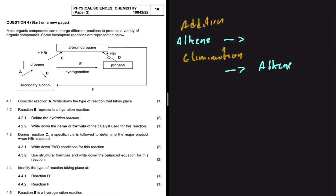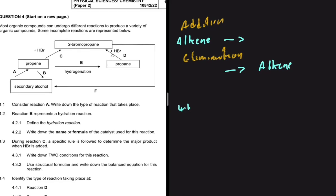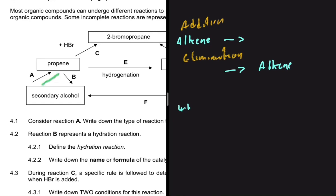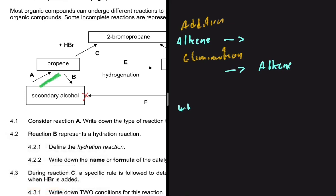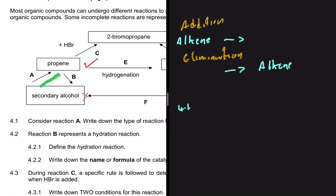Let's answer 4.1 — consider reaction A and write down the type of reaction that takes place. Going through my conditions: do we start with an alkene? No, we start with a secondary alcohol. Do we end up with an alkene? Yes — we have propene as our product. So our reaction is an elimination reaction.